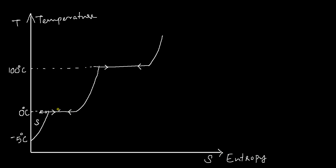So you have defined three phases here. To the left is all solid; from here to here is solid and liquid coexisting; this region is all liquid; from here to here is liquid plus vapour; and beyond this point, all of the liquid has converted to vapour — it's all vapour here. That is the phase change process of water at one atmosphere. Remember, all this happens at one atmospheric pressure. The important thing is we can generate a graph from this process and explain the phase change of water at different pressures using the same methodology, which I will explain in the next video.